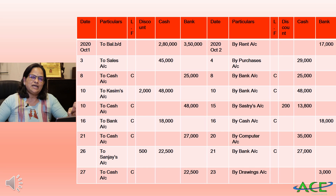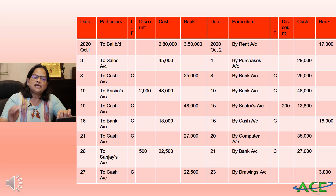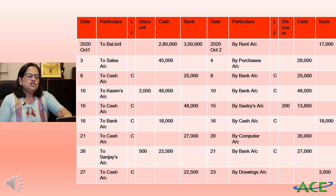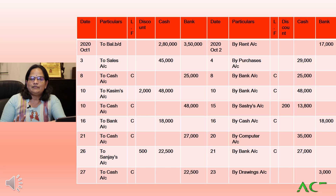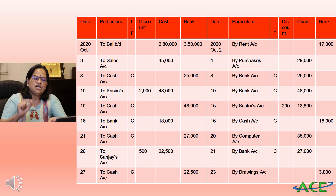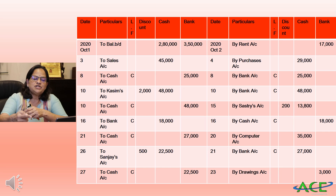First we write the opening balances — October 1st: cash balance rupees 2,80,000 and bank balance rupees 3,50,000. October 2nd: 'By Rent Account' 17,000 in bank column. October 3rd: 'To Sales Account' 45,000 in cash column. October 5th: 'By Purchases' 29,000. October 8th — contra entry: 'To Cash Account' 25,000 in the bank column on the receipt side, and on the credit side 'By Bank Account' contra entry 25,000 in the cash column. October 10th: Kasim's account — 48,000 in bank column, 2,000 in discount column.